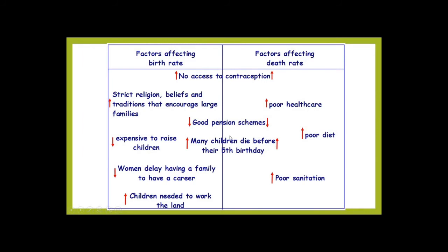You could also further subcategorize these into ones that apply to LICs and ones that apply to HICs. No access to contraception tends to be an LIC factor. Strict religious beliefs tend to be more commonplace in developing countries due to lack of education — you tend to rely more on religion. Good pension schemes are an HIC factor. Poor healthcare, children needed to work the land, women delaying having a family — these are LIC factors. Expensive to raise children is an HIC factor.